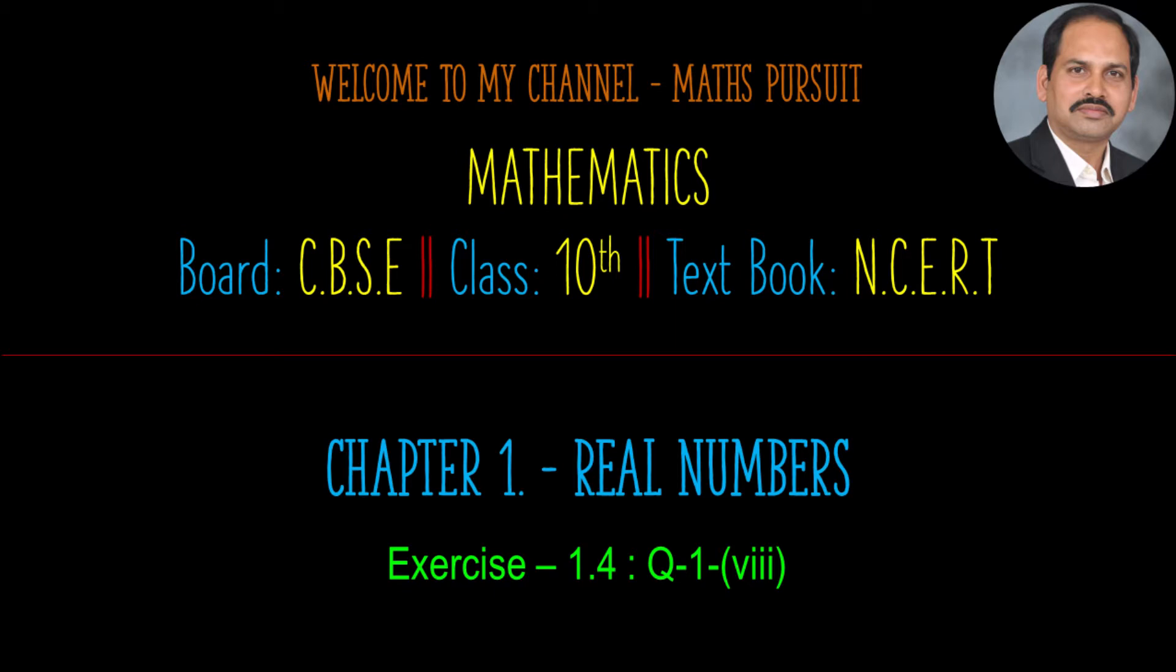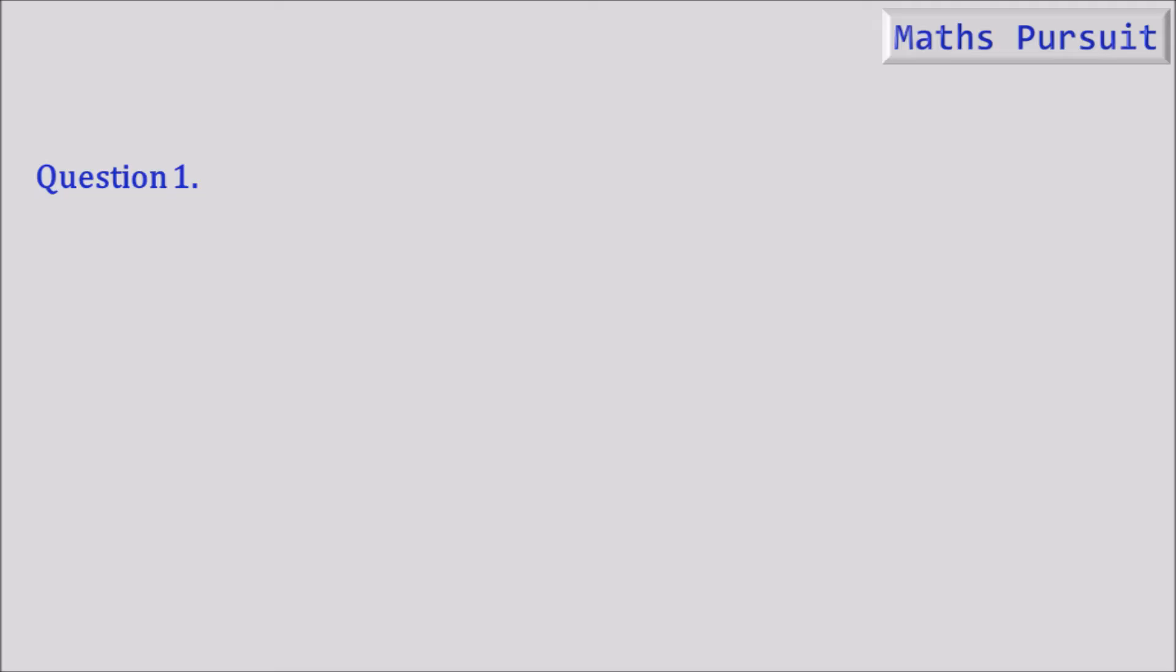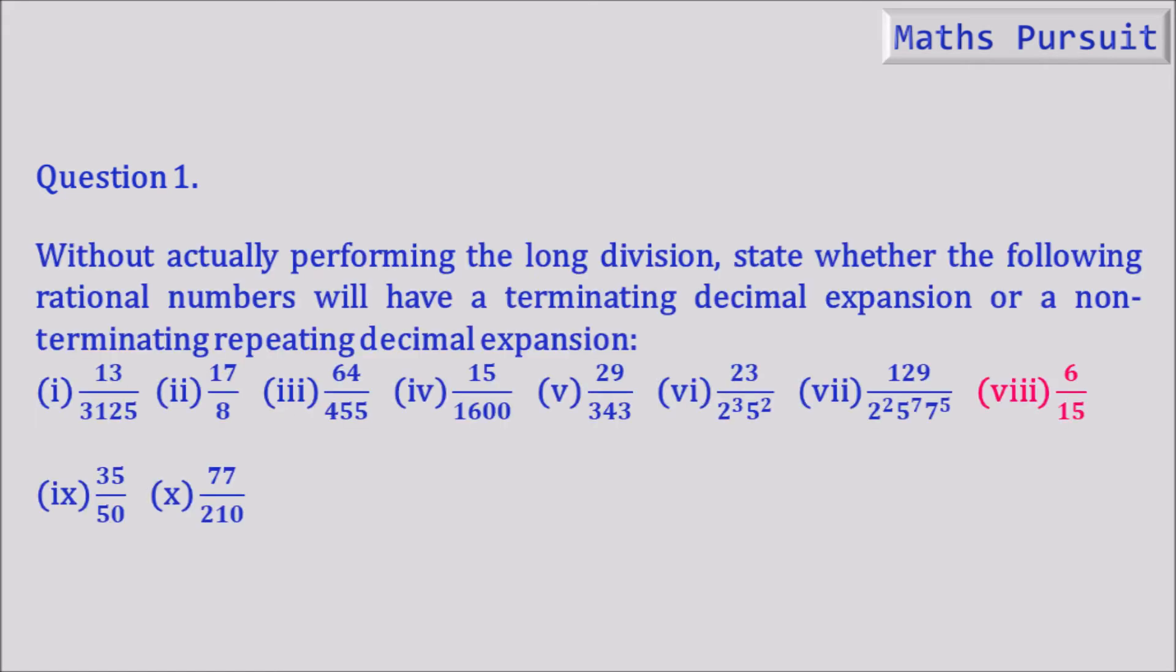Let's see what we have in this question. Without actually performing the long division, state whether the following rational numbers will have a terminating decimal expansion or a non-terminating repeating decimal expansion. The given number is 6 by 15.